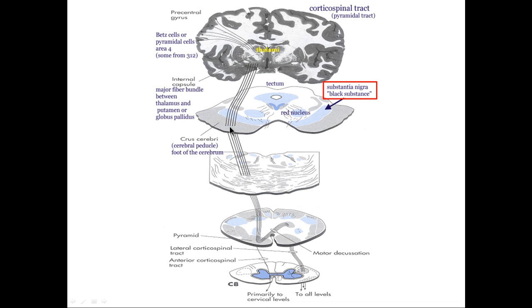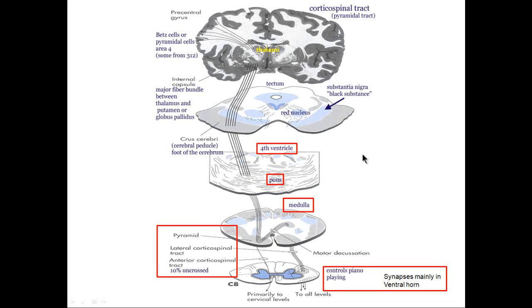The corticospinal tract sits in the crus cerebri and makes its way down to the pons. Here we have the fourth ventricle where the pons is open at the top, the pons with its bulge, the medulla, and the spinal cord. Corticospinal fibers come down through the internal capsule and the center of the cerebral peduncle, get somewhat lost in the pontine gray, and continue into the medulla. They collect on the ventral surface of the medulla in two bumps called pyramids — hence pyramidal tract and pyramidal cells.